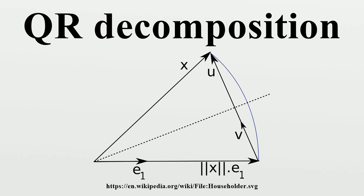Rectangular matrix: More generally, we can factor a complex M times N matrix A with M greater than or equal to N as the product of an M times M unitary matrix Q and an M times N upper triangular matrix R.